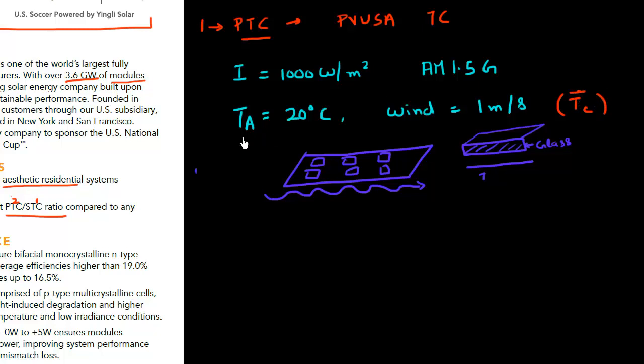So the temperature of the cell for sure would be higher than the temperature of the ambient because you have this light with the intensity of a thousand watt per meter squared shining upon this panel. And this glass is a poor conductor of heat. So there's no way for this heat to escape as well, besides from the bottom if there's a wind flowing. So this temperature would be definitely higher than 20 C. And it would depend largely on how your module is designed, how efficient your cell is, and so on.